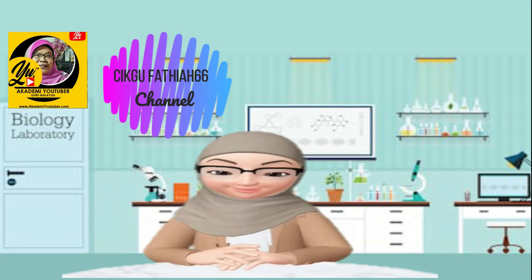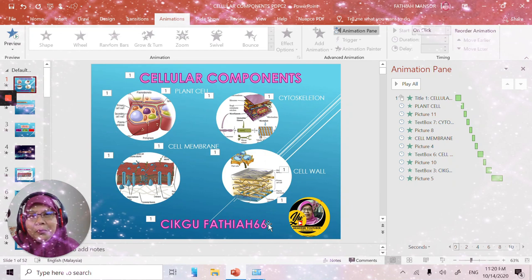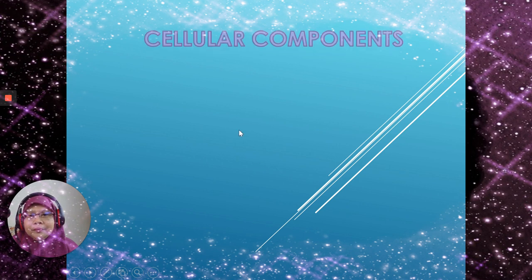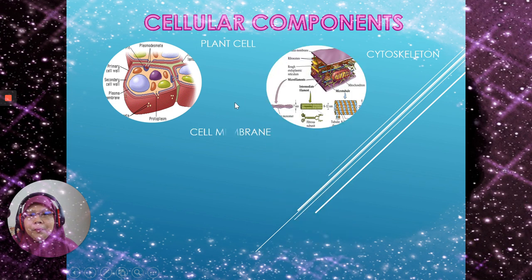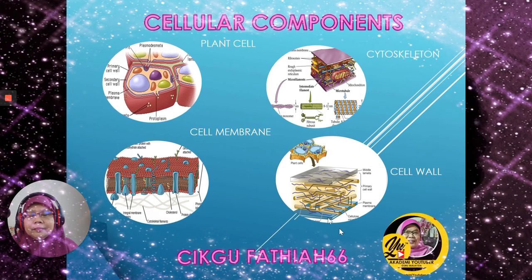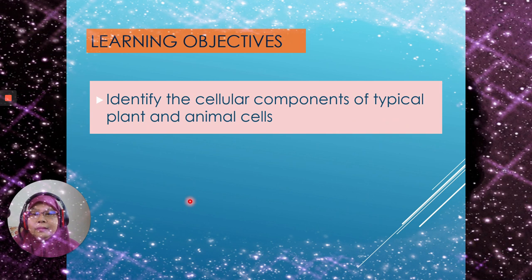Hi! Welcome to Syedgo Fahsia's channel! For today, we will learn about cellular components in plant cells and animal cells. The learning objective for our lesson is to identify the cellular components of the plant and animal cell.